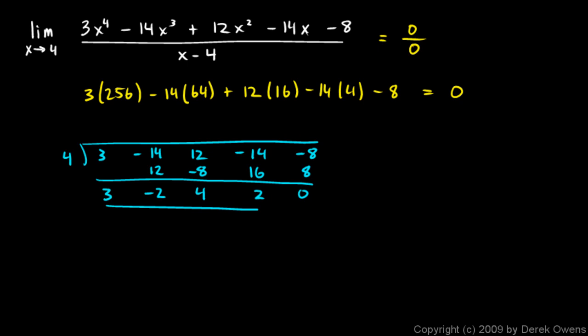So these are the coefficients of our other factor. This is 3x cubed minus 2x squared plus 4x plus 2. That's what this expression will simplify to after we cancel out the factor of x minus 4. So this limit will be equivalent to the limit as x approaches 4 of this. So we can just plug in 4 into that. So this is going to be 4 times 4 cubed minus 2 times 4 squared plus 4 times 4 plus 2. And that does in fact work out to a number. It comes out to 178. And that is our answer.